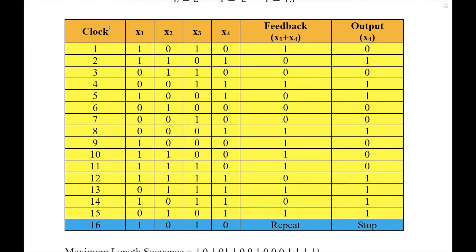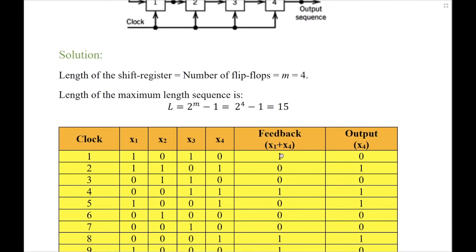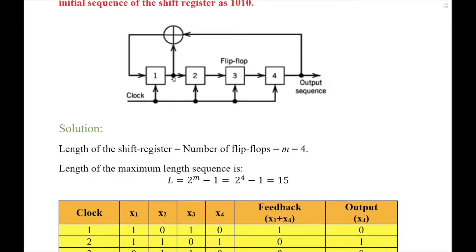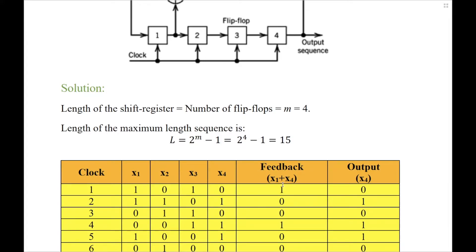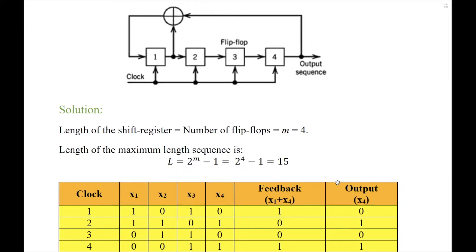Let us now look at how this sequence is generated. This is the table that illustrates the same. I have column 1 representing the clock, then 4 columns representing the output of each flip-flop. Then I have a feedback path — the feedback is the output of the first flip-flop and that of the last flip-flop. I have represented the output of each flip-flop as x1, x2, x3, and x4. The feedback is a modulo-2 addition of x1 and x4, and the output is equal to x4.